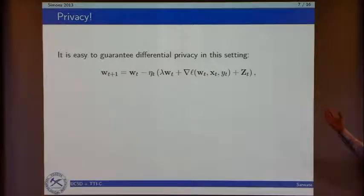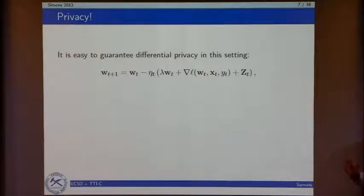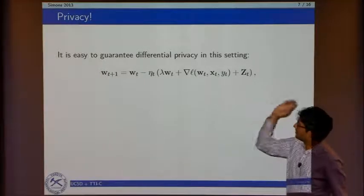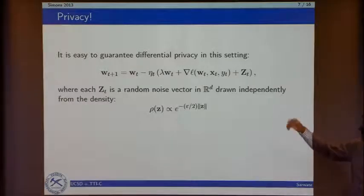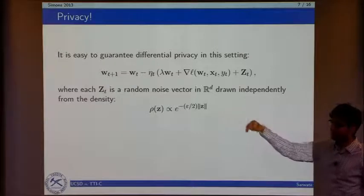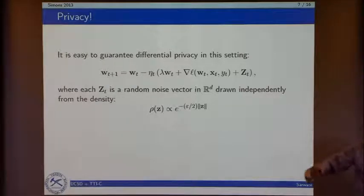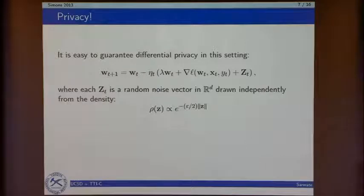For the differentially private gradient descent procedure, you just add some noise to the gradient — you take a noisy gradient step, hoping that the stochastic approximation plus this extra noise works out. The noise distribution is chosen to be isotropic and Laplace-distributed. We add noise at every iteration.